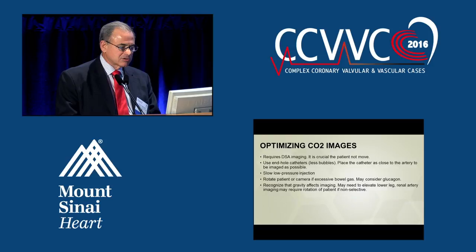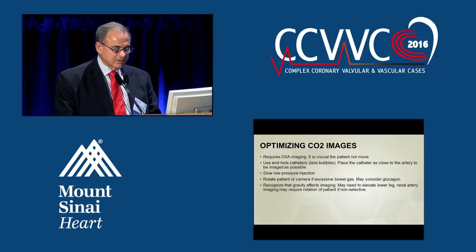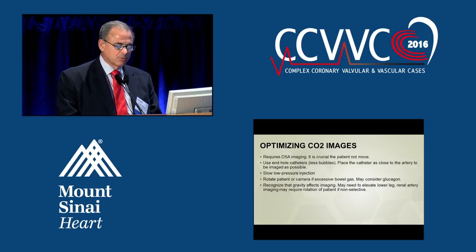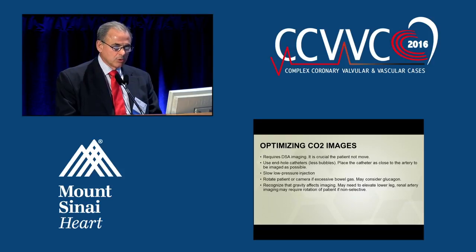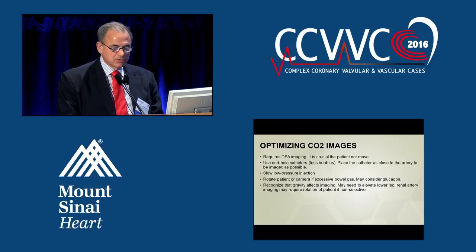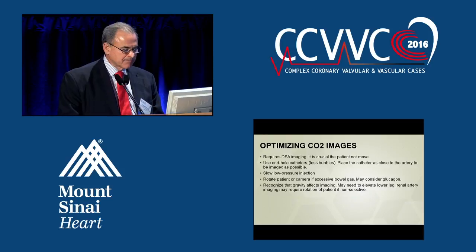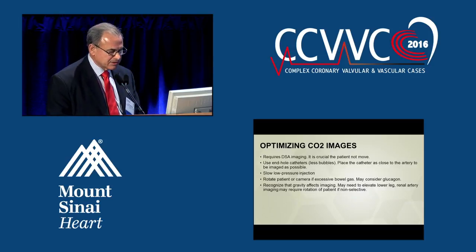Optimizing CO2 images is crucial. It requires DSA imaging and it's crucial the patient not move. It's ideal to use end-hole catheters rather than side-hole catheters because they cause fewer bubbles. Place the catheter as close to the artery to be imaged as possible. You want a slow, low-pressure injection — done by hand, as it doesn't require nearly as much pressure as iodinated contrast. You can consider glucagon to eliminate overlying bowel gas.